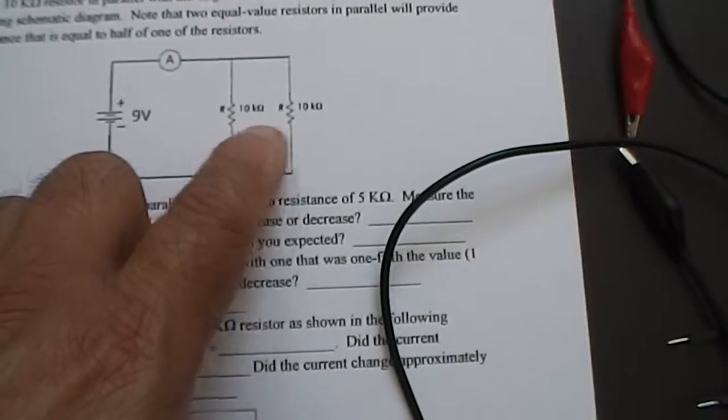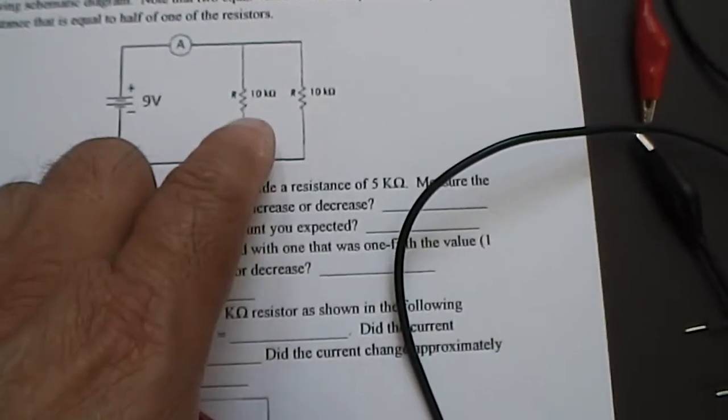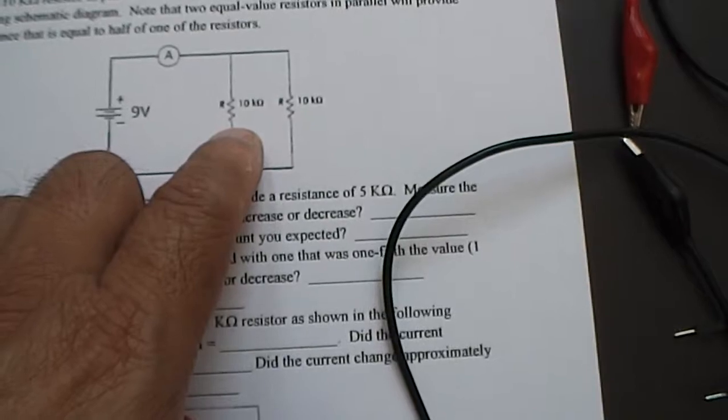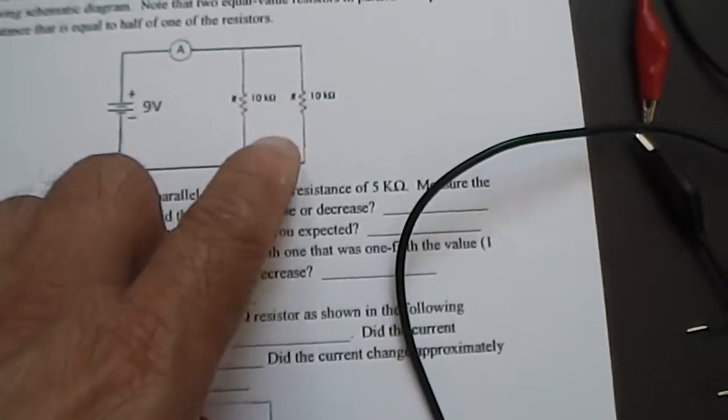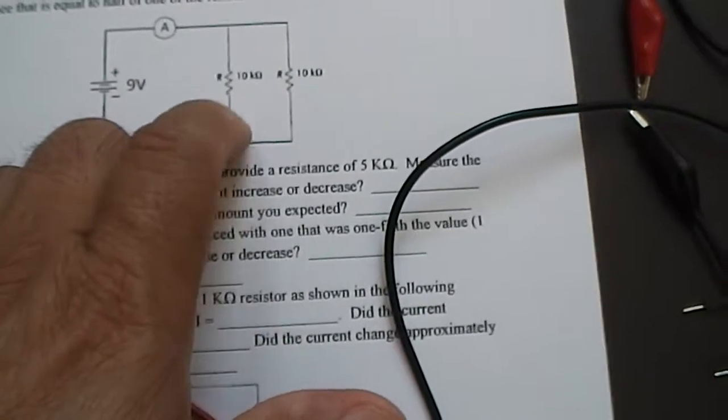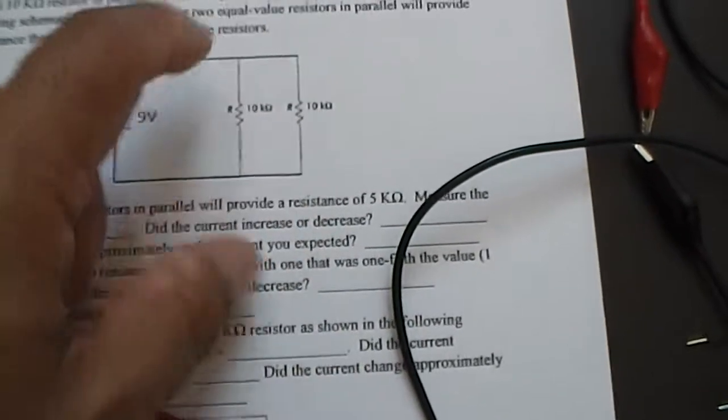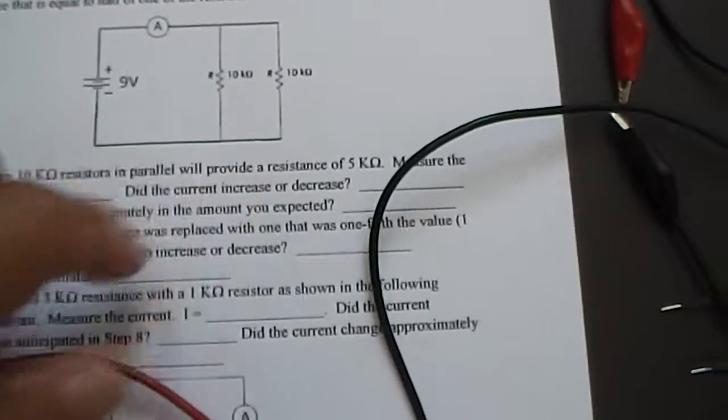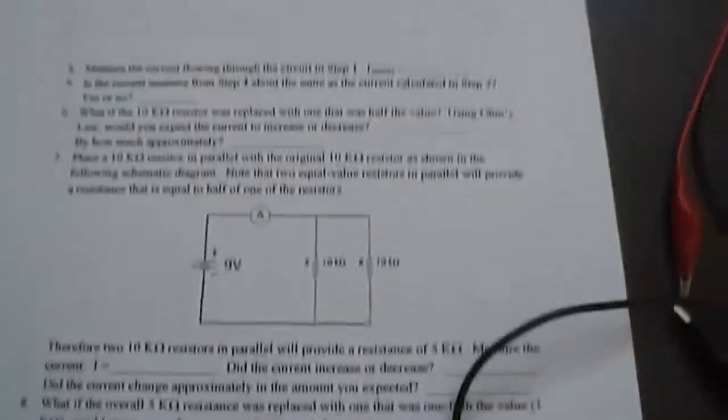Now when you have two equal resistances in parallel, you're going to get an overall resistance that is half of one of them. So 10k in parallel with 10k is going to give me an overall resistance of 5k from end to end. So therefore, let's assemble the circuit.